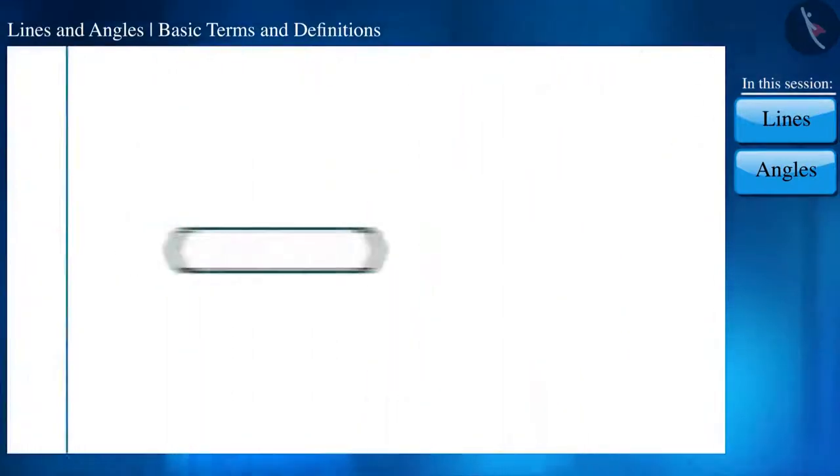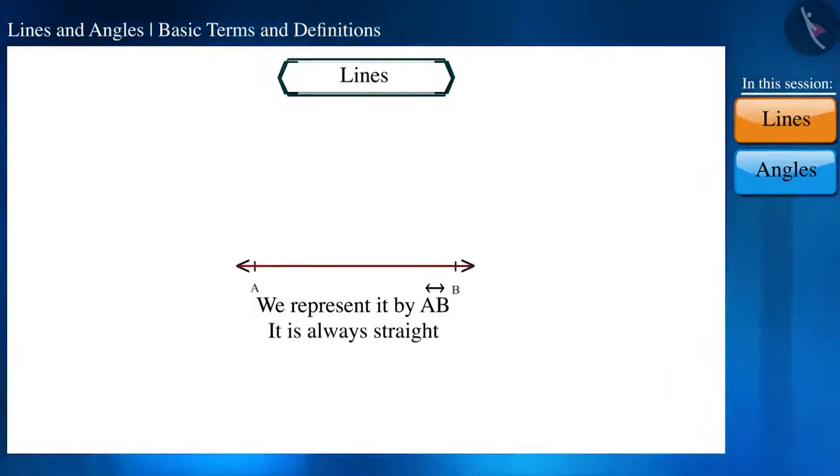Let's start this session with lines. As we know, lines look somewhat like this. We represent it by AB, PQ, MN and sometimes by small letters L, M, and N also. Lines are always straight. We can say that it has no width. This sign of an arrow reflects that it can be extended infinitely in both directions.